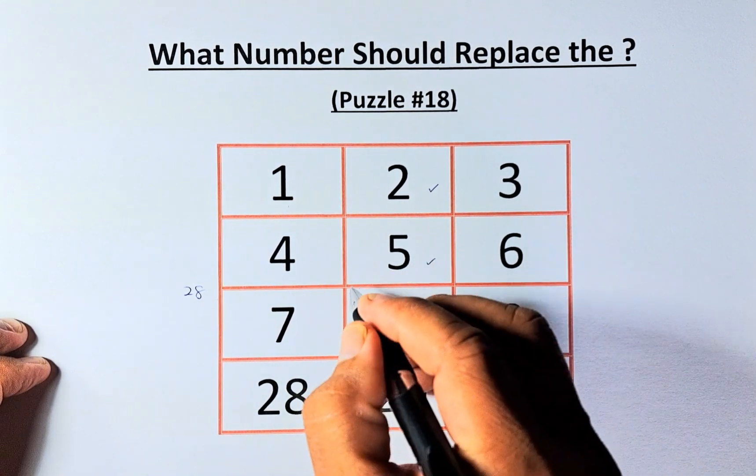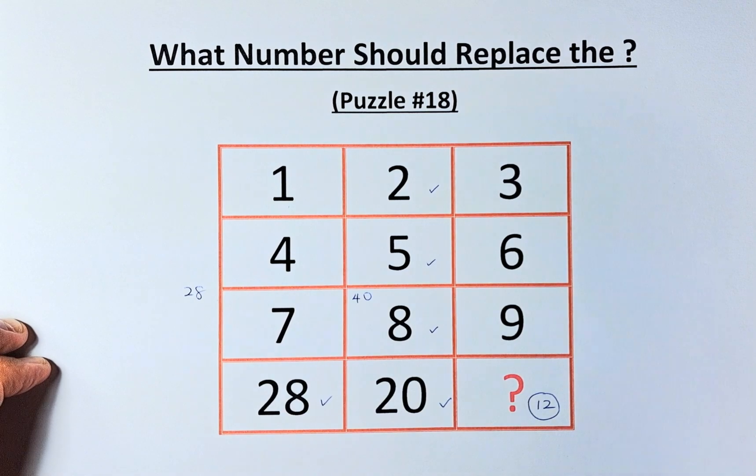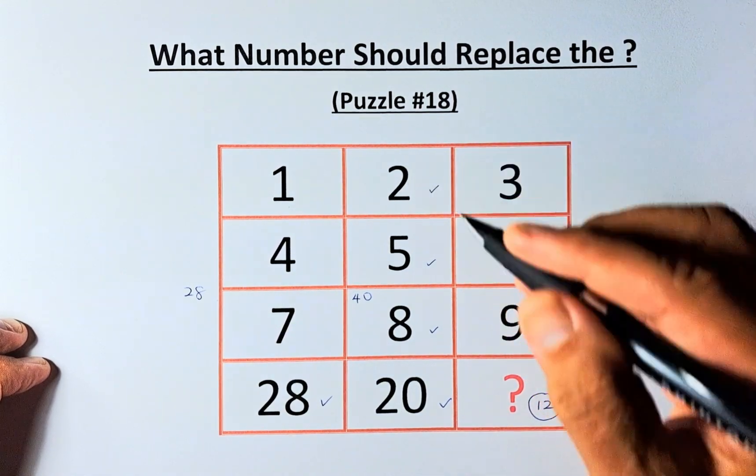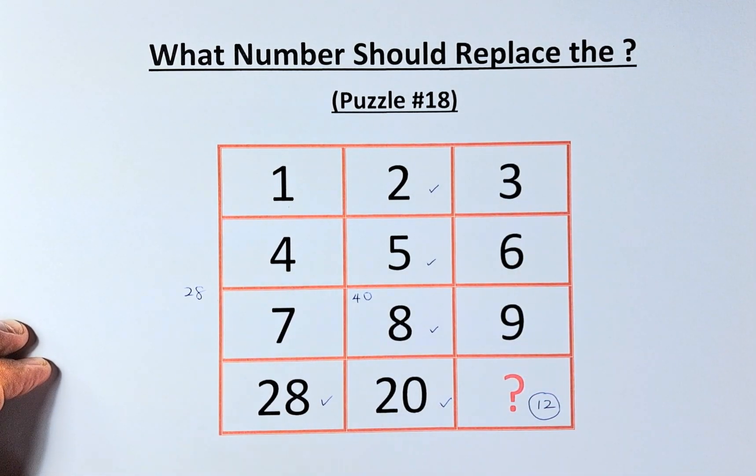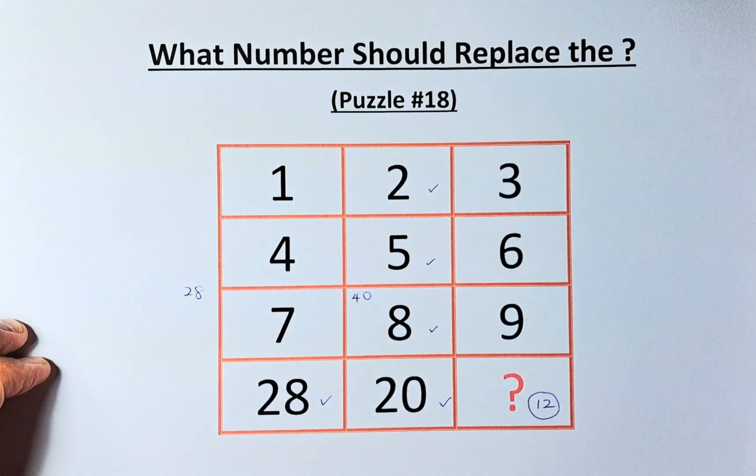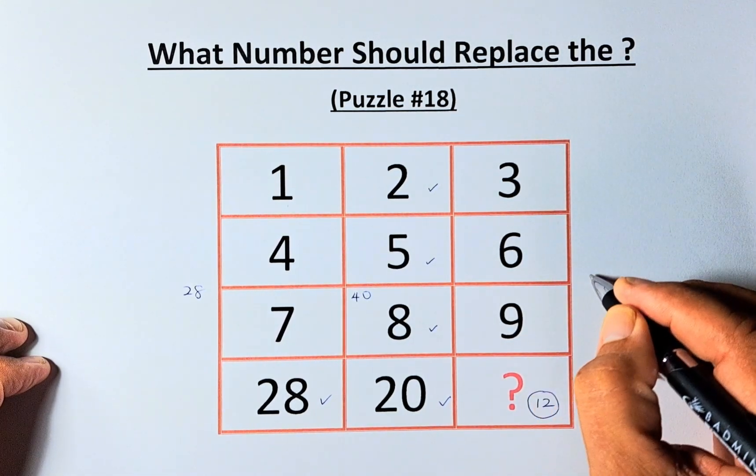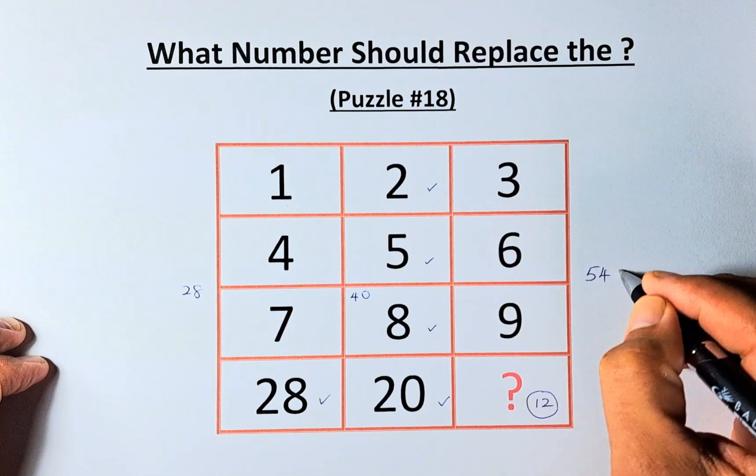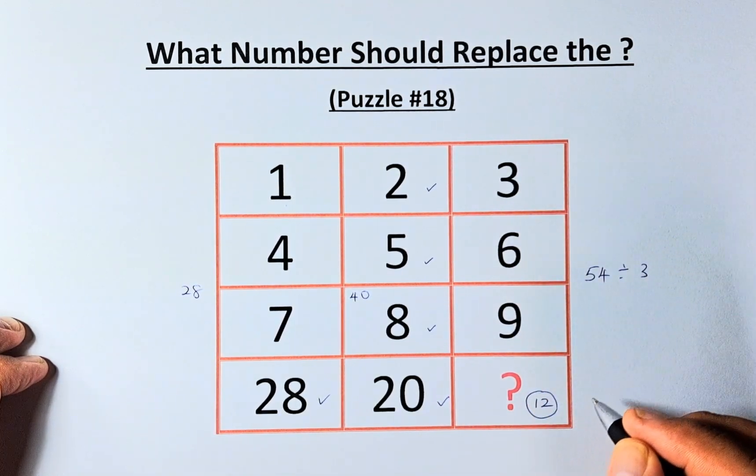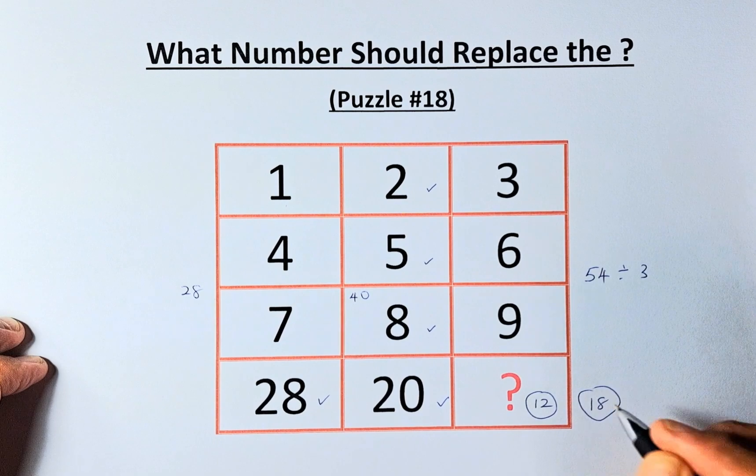Similarly, 5 times 8 is 40, divided by 2 will give us 20. To get the question mark, we're going to take 6 times 9, that will give us 54, and then divide by 3. The next answer is going to be 18.